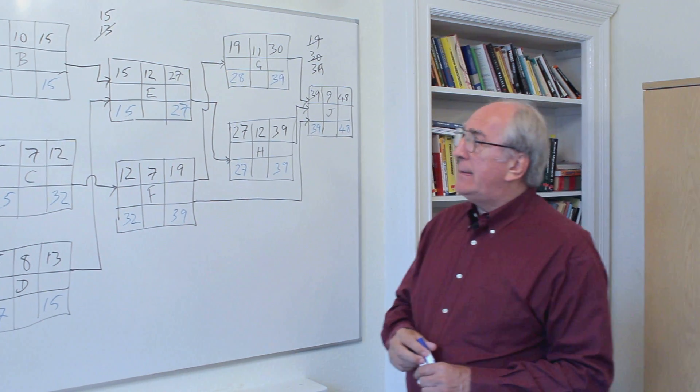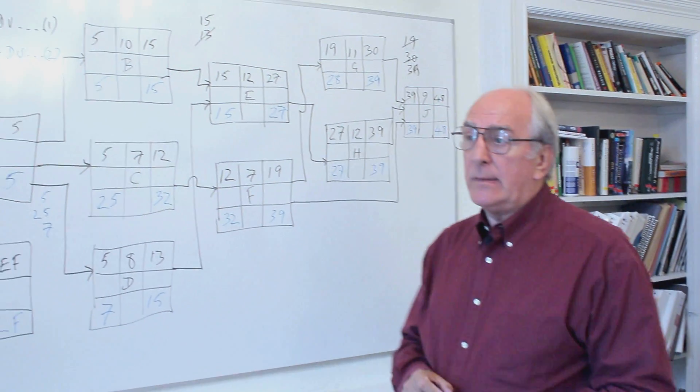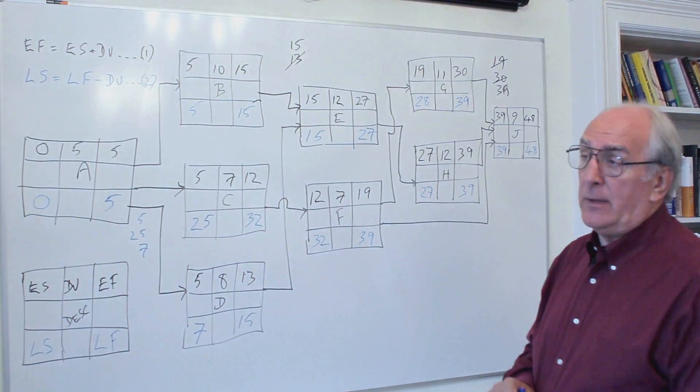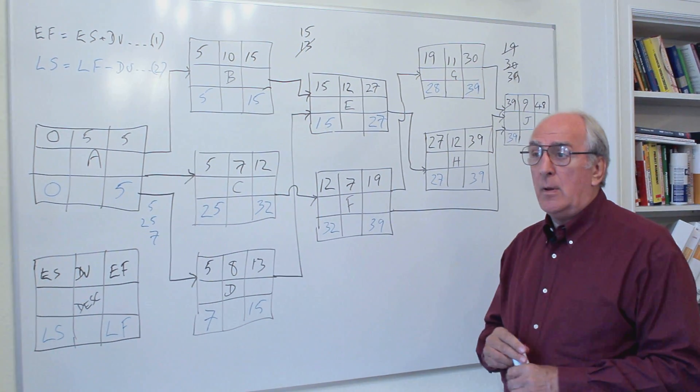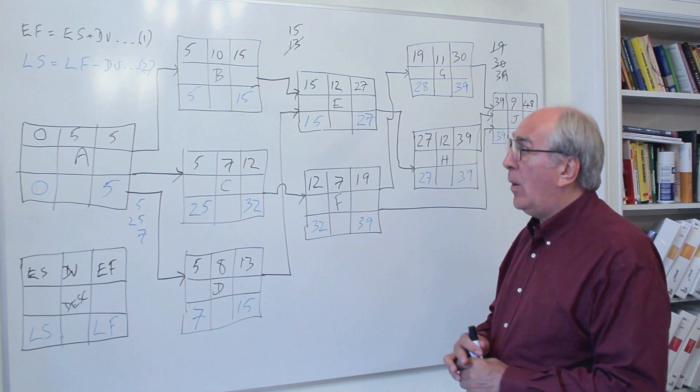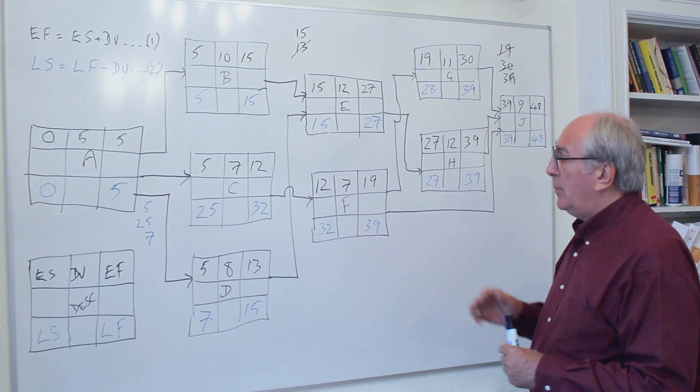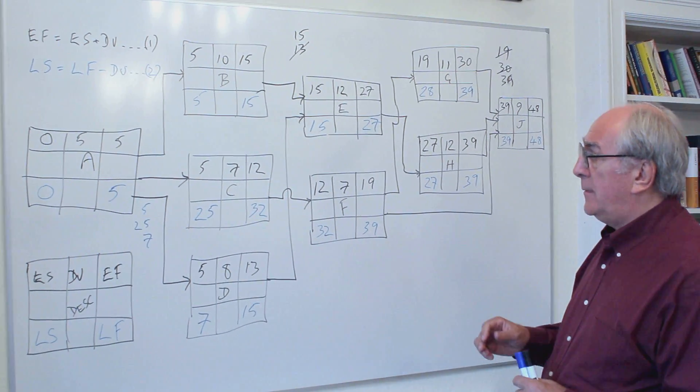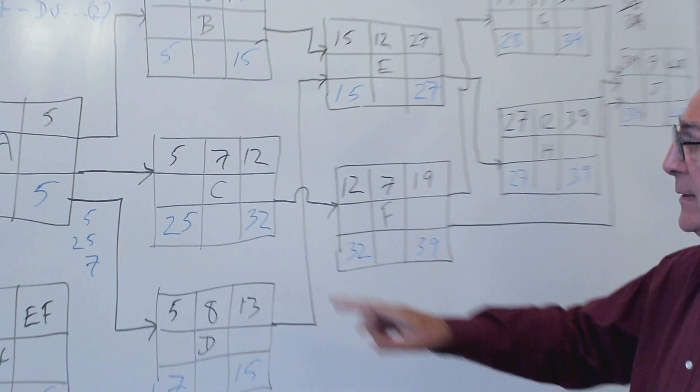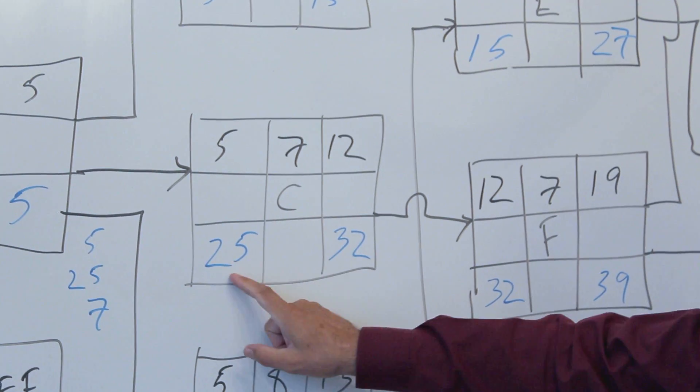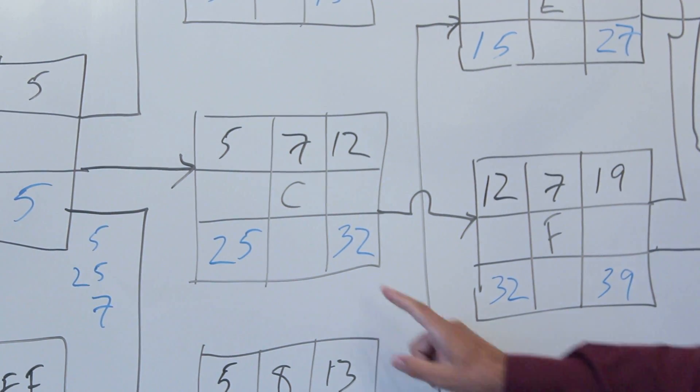What we notice is that the late starts and the early starts are different in some activities and in other activities they're the same. What does that mean? Well, if we think about it, for example activity C: its early start is 5, its early finish is 12, but its late start is 25 and its late finish is 32.